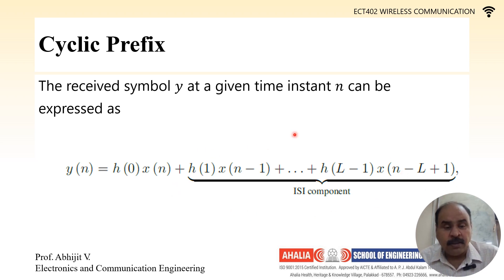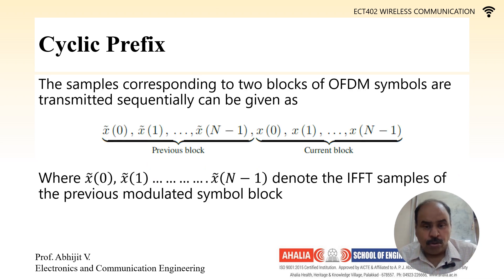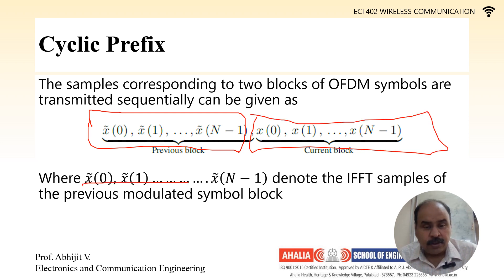The cyclic prefix for x[n] is defined as x[N-mu] to x[N-1]. The received symbol Y at a given time instance n can be expressed as Y[n] = H0*x[n] + H1*x[n-1] + ... + H(L-1)*x[n-L+1]. Y[n] = H0*x[n] is the data to be received at the receiver's end — this is the desired component — and the remaining terms represent inter-symbol interference. The samples corresponding to two blocks of OFDM are transmitted sequentially as x̂[0], x̂[1] up to x̂[N-1] for the previous block and the current block.